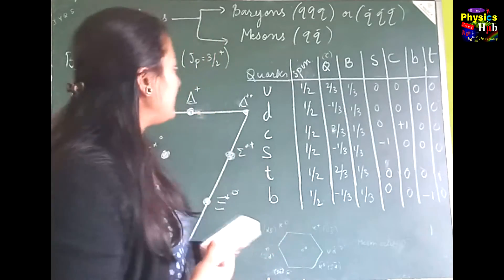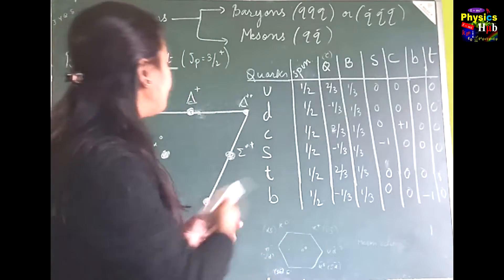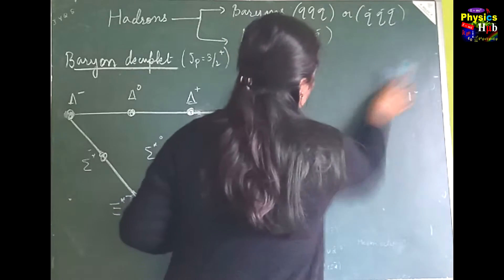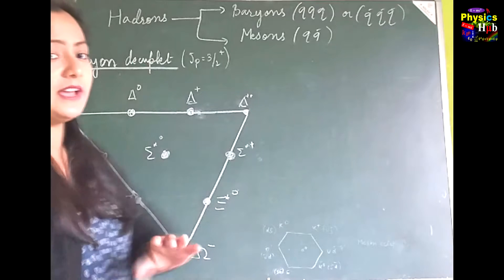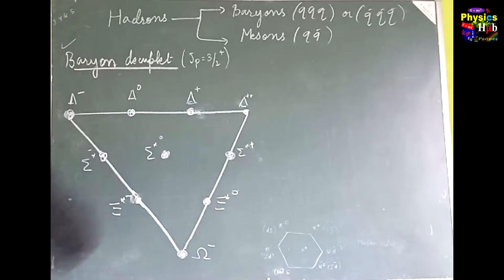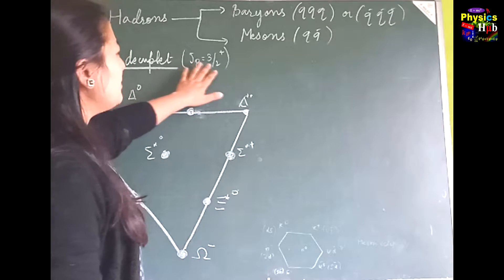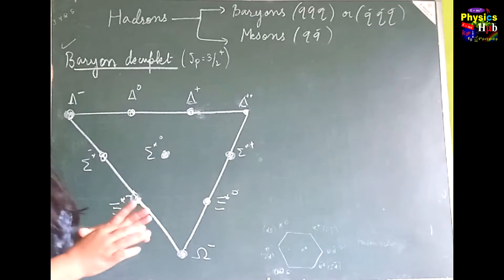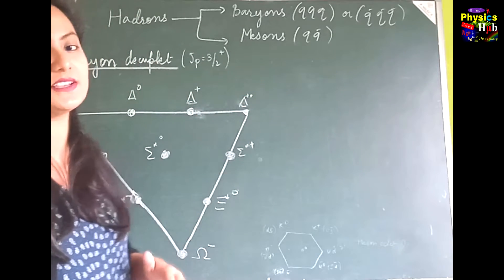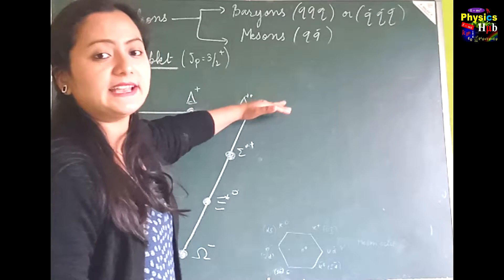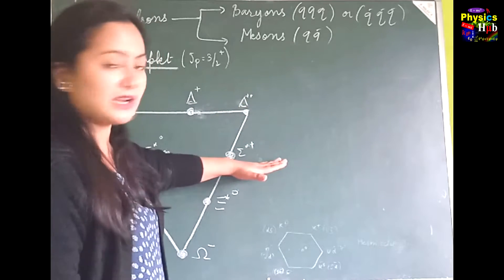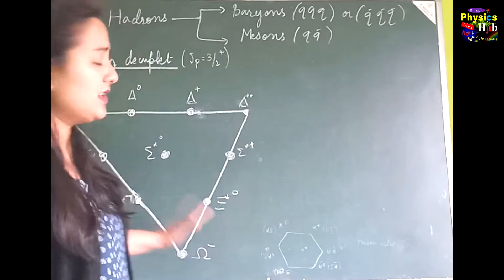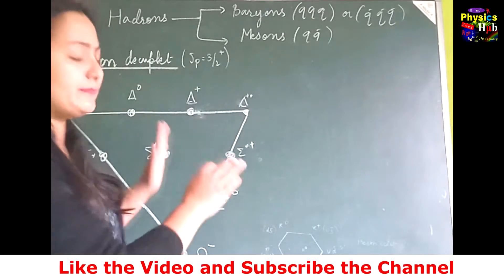Based on quark composition, we can organize particles using the eightfold way. First, let us look at the baryon decuplet, whose angular momentum value is 3/2. The important thing to remember is the layers: the first layer has the deltas, the second has the sigmas, the third has the cascades, and the last has the omega — forming an inverted pyramid.